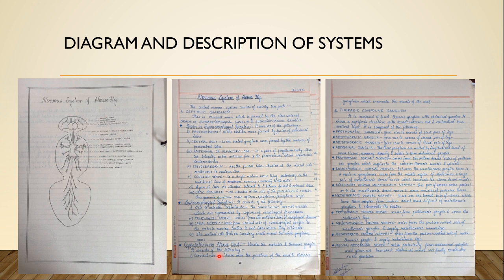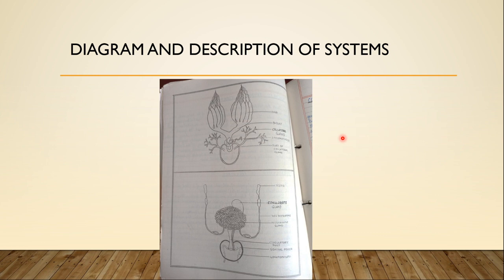Going back to the practical file: when we talk about different systems such as digestive, reproductive, and nervous system in your syllabus, we are going to make diagrams on the left side and write descriptions on the right side. If you have multiple small diagrams, you can use the same page with a dividing border in the center.